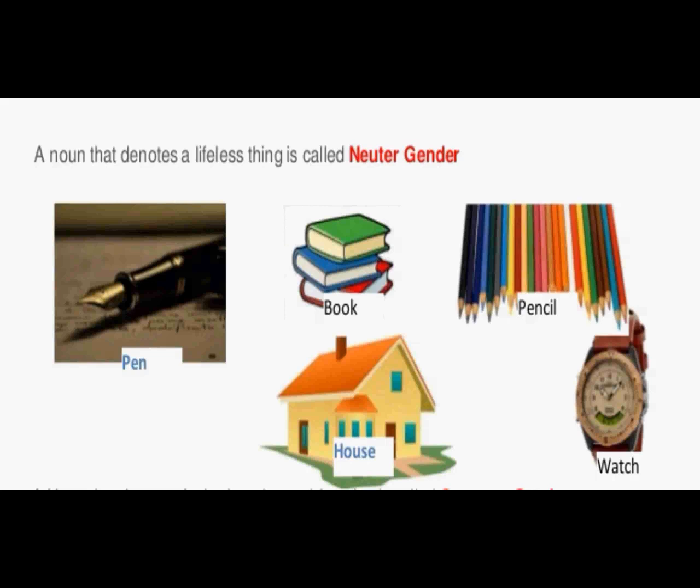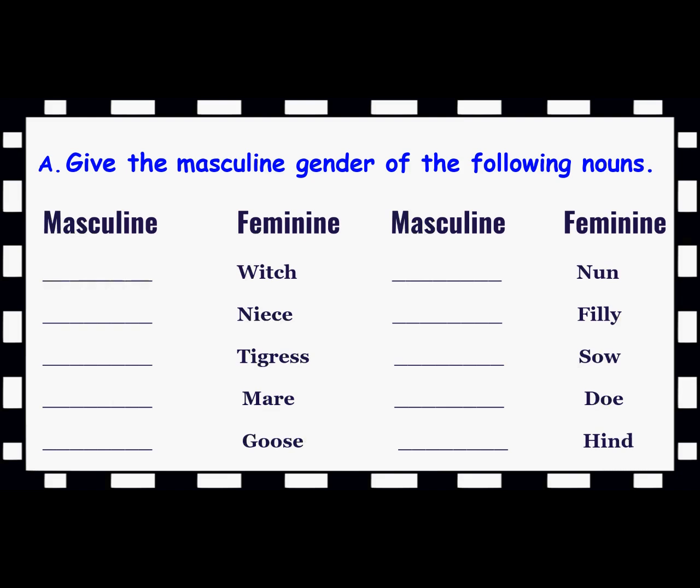With this, the basic definition of gender and the kinds of gender is over. Only four kinds of gender: masculine, feminine, common, and neuter. So now in today's class, before we finish, let us do an exercise.